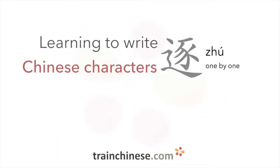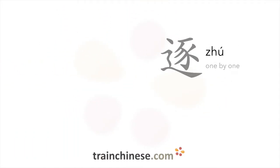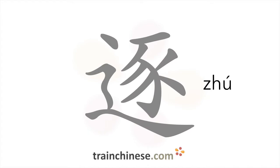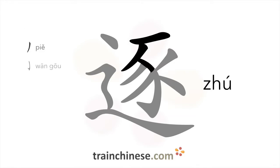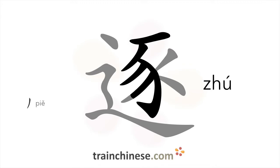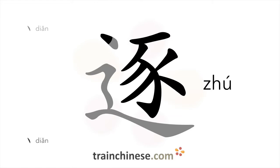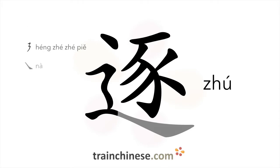Let's take a look at this character. There are 10 strokes in this character: 横, 撇, 斑, 撇, 撇, 撇, 撇, 点, 点, 横折折折撇.